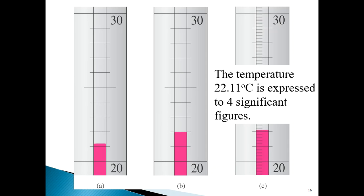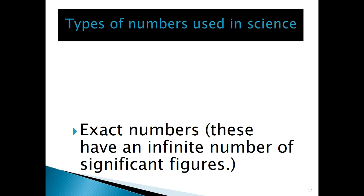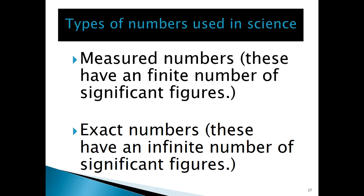That illustrates how we end up with the number of significant figures from a direct measured value. In science, there are two types of numbers: measured numbers — which, as we can see from the examples, have a finite number of significant figures — and exact numbers, which unlike measured numbers have an infinite number of significant figures.